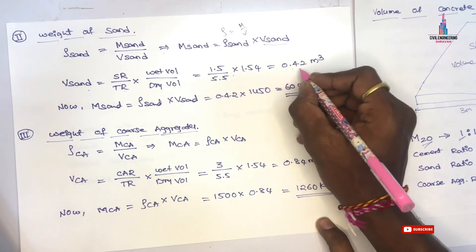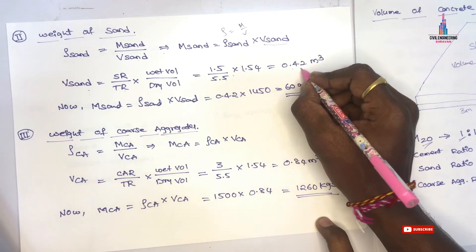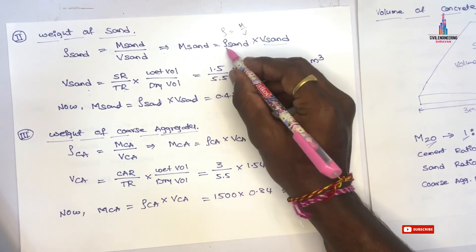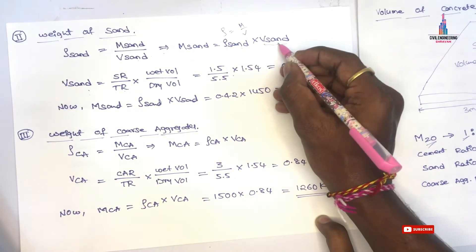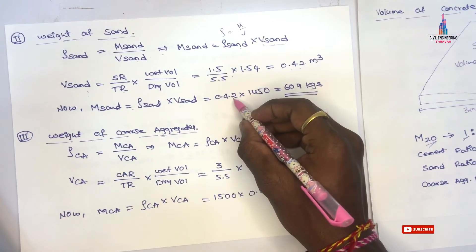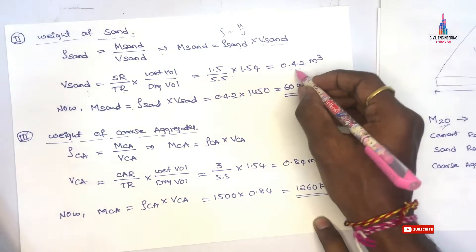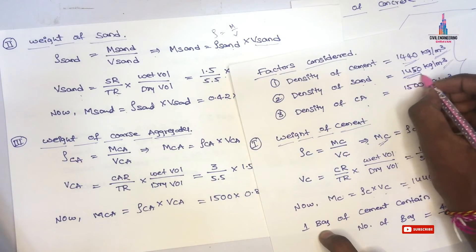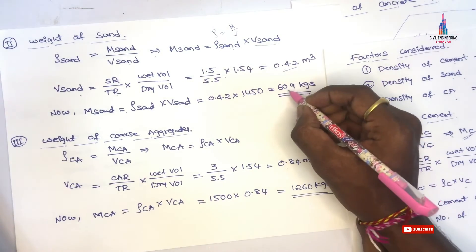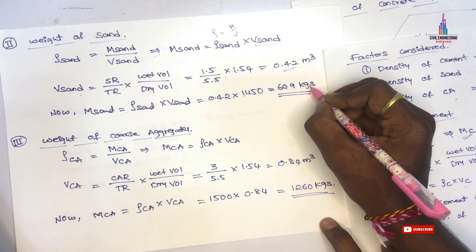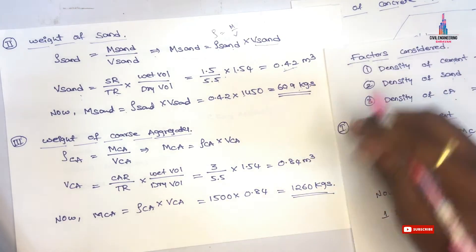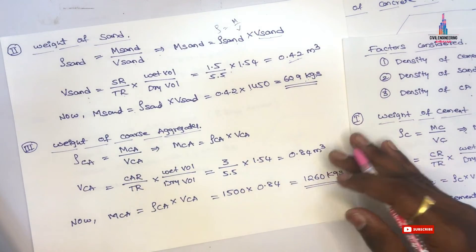This gives a volume of 0.42 cubic meters for sand. The mass of sand equals density of sand multiplied by volume of sand: 1450 multiplied by 0.42, which equals 609 kg. For casting 1 cubic meter of slab, 609 kg of sand is required.